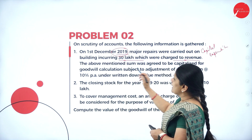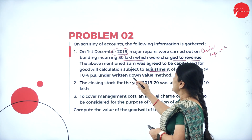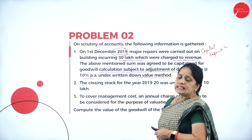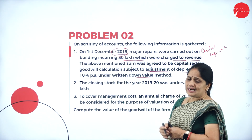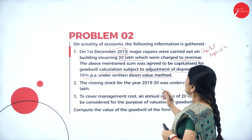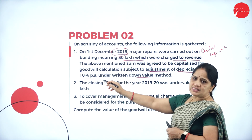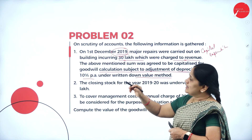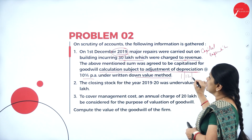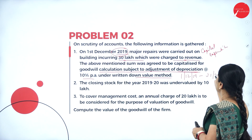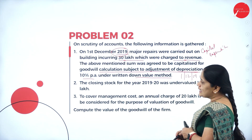The above-mentioned sum was agreed to be capitalized for goodwill calculation, subject to the adjustment of depreciation at 10 percent per annum under the written-down value method. So we have to calculate depreciation on 30 lakhs at 10 percent for 4 months — that is from 1st December 2019 to 31st March 2020 — which is a period of 4 months.